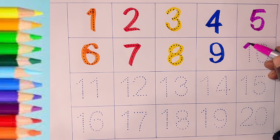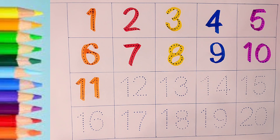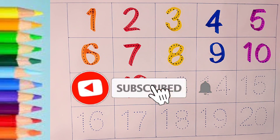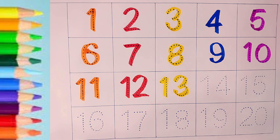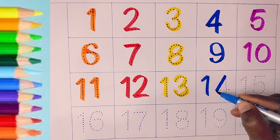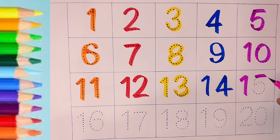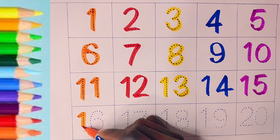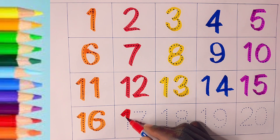Color ten: pink. Color eleven: orange. Color twelve: red. Color thirteen: yellow. Color fourteen: blue. Color fifteen: pink. Color sixteen: orange. Color seventeen: red.